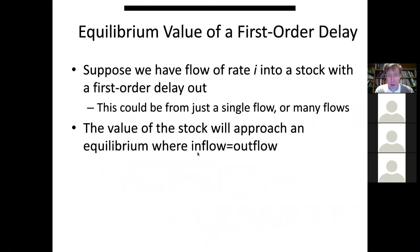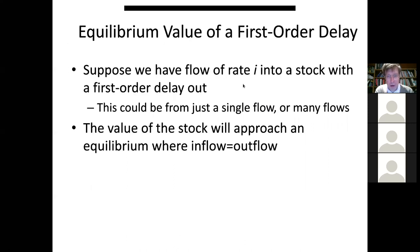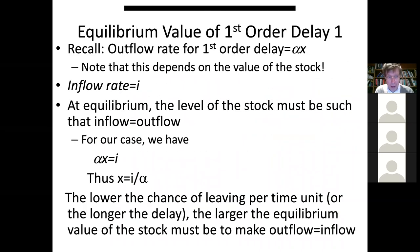In general, we'll have a non-zero inflow I — people per unit time. The value of the stock will approach an equilibrium where inflow equals outflow. Let's look at some of the mathematics. The outflow rate, calling the stock value X, is alpha times X, where alpha is some fixed constant. The inflow rate we'll call I. At equilibrium, we need alpha·X = I. Since alpha is a constant, X at equilibrium equals I over alpha.